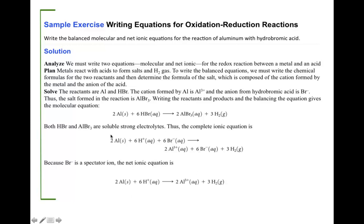The net ionic equation will be 2Al plus 6H⁺ in aqueous solution producing 2Al³⁺ in aqueous solution plus three moles of hydrogen.